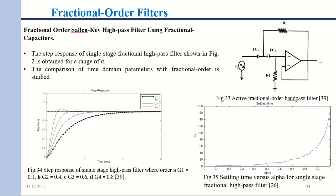Moving on to a fractional order Sallen-Key high pass filter using fractional capacitors. An active fractional order bandpass filter has been designed with two fractional capacitors. The roll-off rate of the filter changes with the increasing or decreasing order of the fractional capacitor.